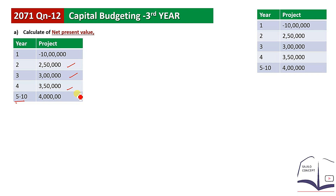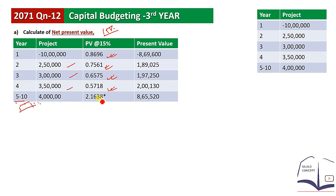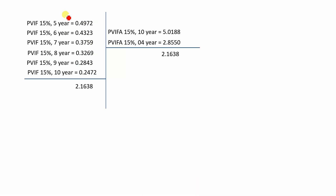The rate of return is 15%. We look up the PVIF table. At 15%, Year 1 factor is 0.8696, Year 2 is 0.7561. For Year 3 it is 0.575, Year 4 is 0.575. The PVIFA table value is 2.1638. Years 5 through 10 are also referenced from the PVIF table.